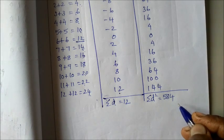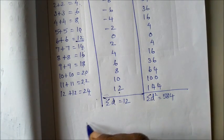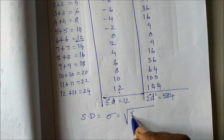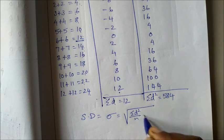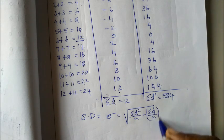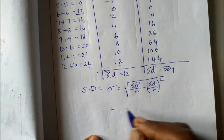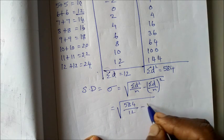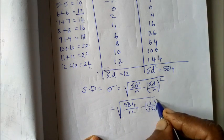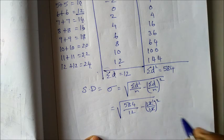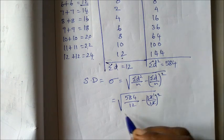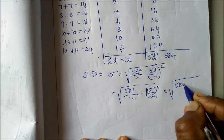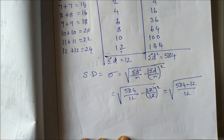Now find the standard deviation. The formula is sigma equals root of summation d square divided by n minus summation d by n the whole square. This equals root of 584 divided by 12 minus 12 by 12 whole square. 12 by 12 is 1, and 1 square is 1.